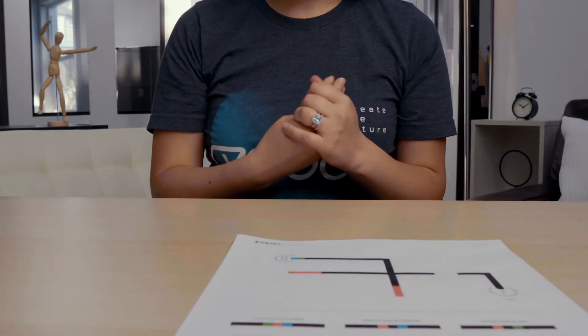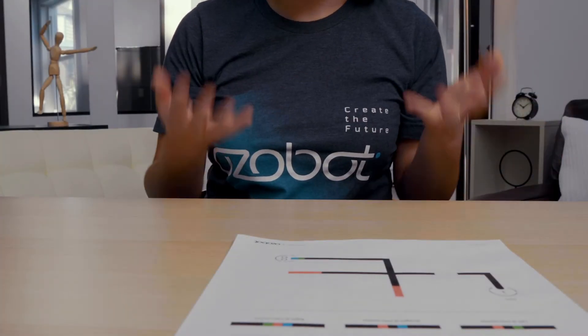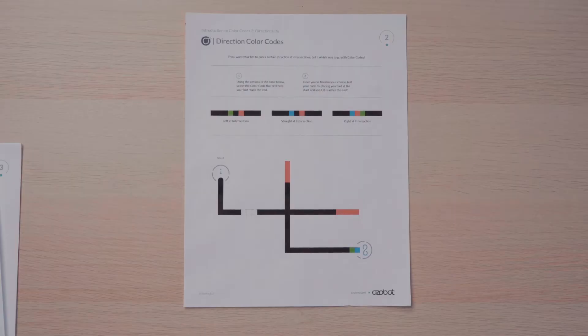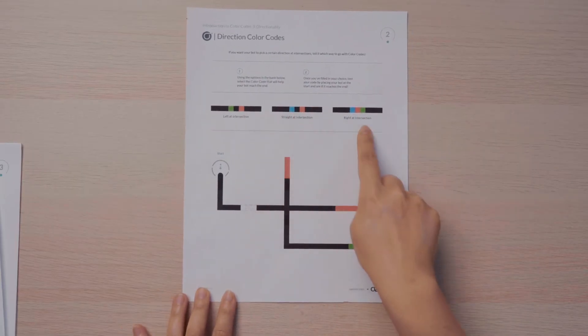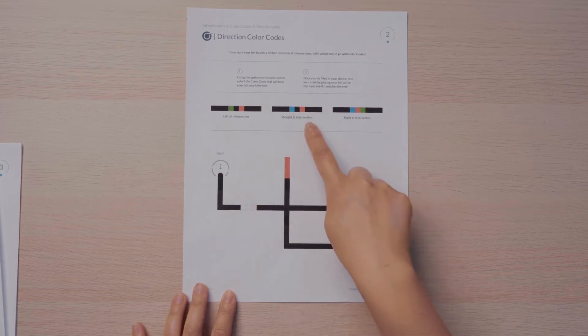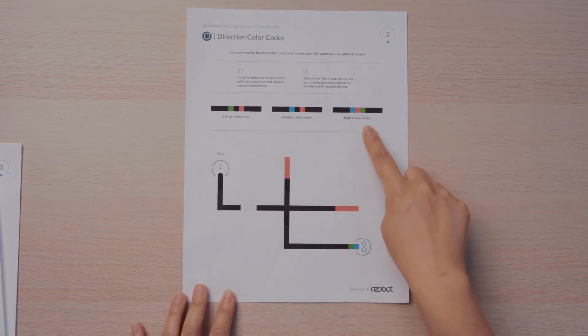Sometimes you want to tell the bot which way to go rather than having it choose randomly. Let's practice. Find page two. Here we have a couple of color codes: Left at intersection, straight at intersection, and right at intersection.